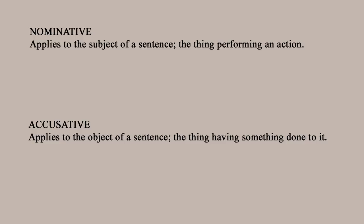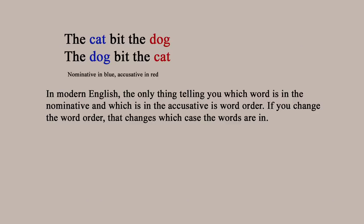Case is something we're all aware of, but if you've never learnt a second language, chances are you're not exactly sure how it works. Old English had four cases: the nominative, accusative, dative, and genitive. The nominative case applies to the subject — the thing in the sentence doing an action. The accusative applies to the object — the thing having an action done to it. In English, apart from pronouns like 'he' and 'she', we mark nominative and accusative using word order alone. So 'the cat bit the dog' versus 'the dog bit the cat' — switching the order changes the meaning completely.